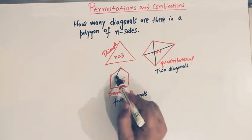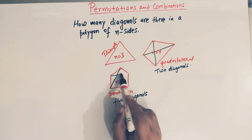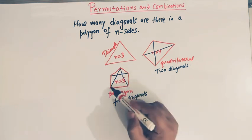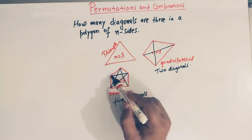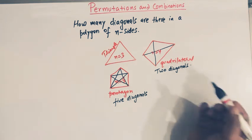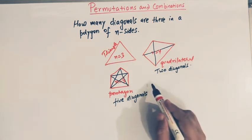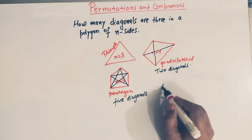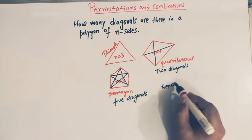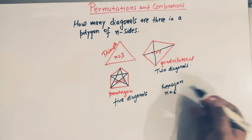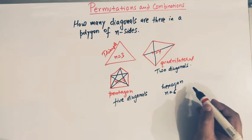For a pentagon we can count: this is the first one, this is the second one, this is the third one, this is the fourth one, and this is the fifth one — so a pentagon has five diagonals. Similarly, for a hexagon which has six sides, n is equal to six, and we want to find the number of diagonals.